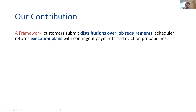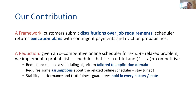We present a framework in which customers are requesting their jobs online, but those requests are probabilistic. The scheduler is going to make decisions given the probabilistic information, but those plans will be contingent. The scheduler makes execution plans where the prices and the actual scheduling can depend on the job realizations in certain ways. We design mechanisms for probabilistic scheduling in the form of a reduction: we think of a relaxed problem where jobs are deterministic but fractional, and then show how to convert that into something that works in a probabilistic environment while retaining approximately the same properties and being truthful.